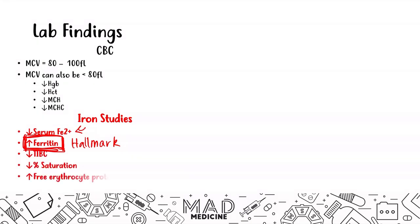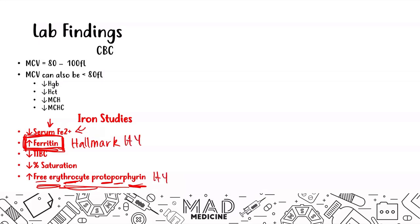Free erythrocyte protoporphyrin levels will also be elevated. Because serum iron is decreased, you cannot produce proper heme — protoporphyrin accumulates because it cannot bind iron in the final step of heme synthesis. Increased ferritin and elevated free erythrocyte protoporphyrin should clue you into anemia of chronic disease alongside an underlying chronic condition.